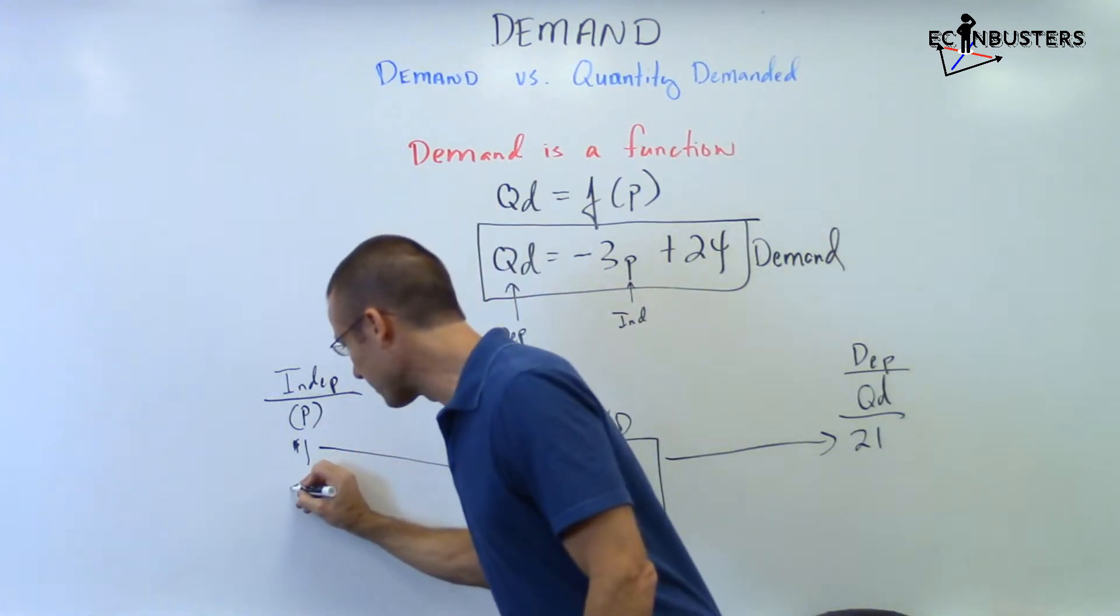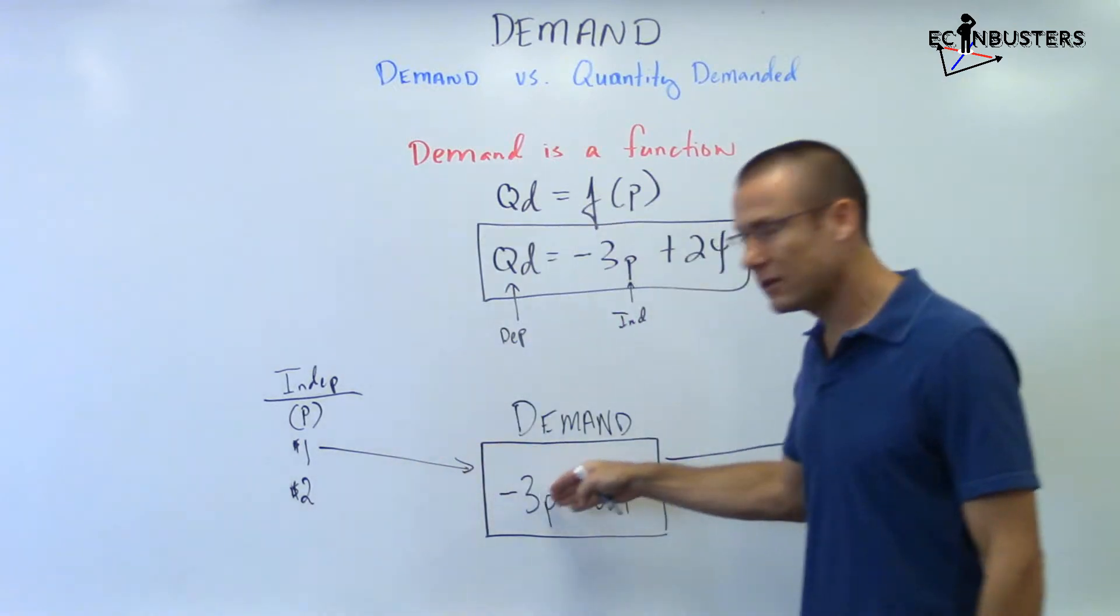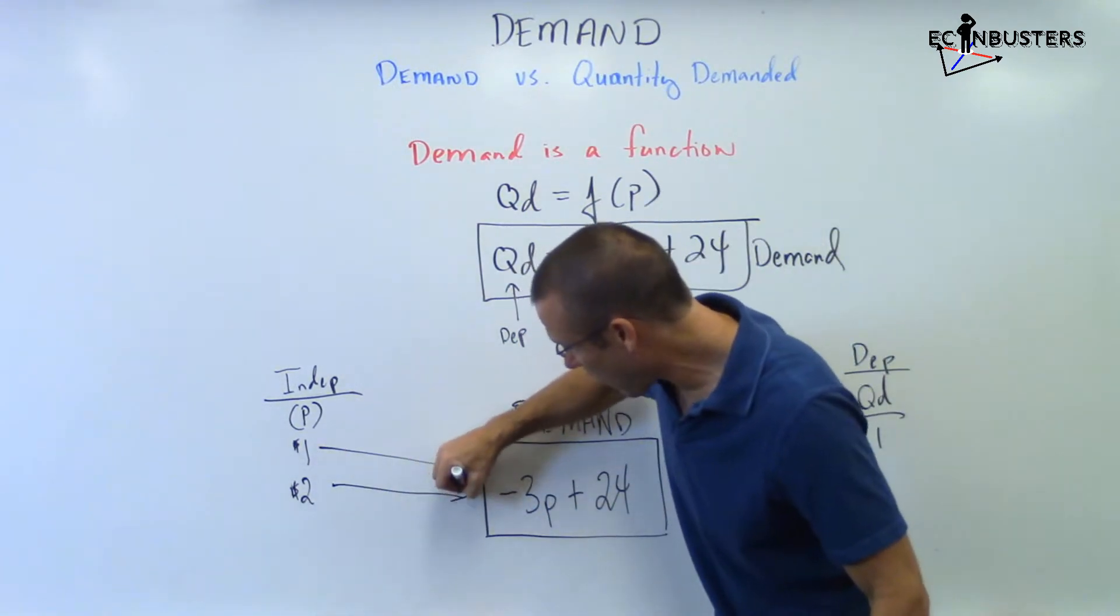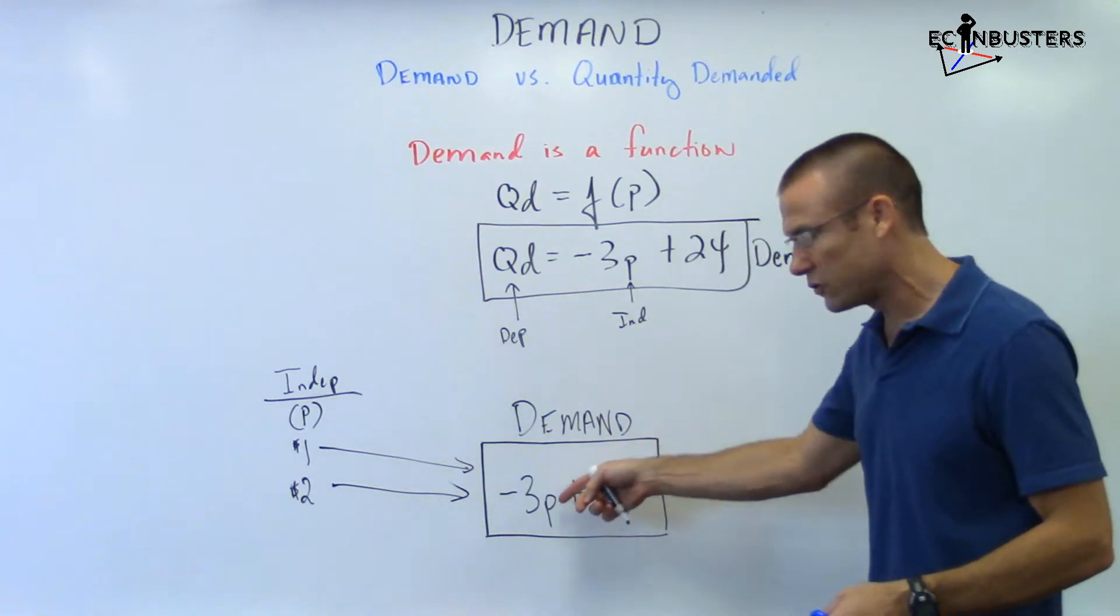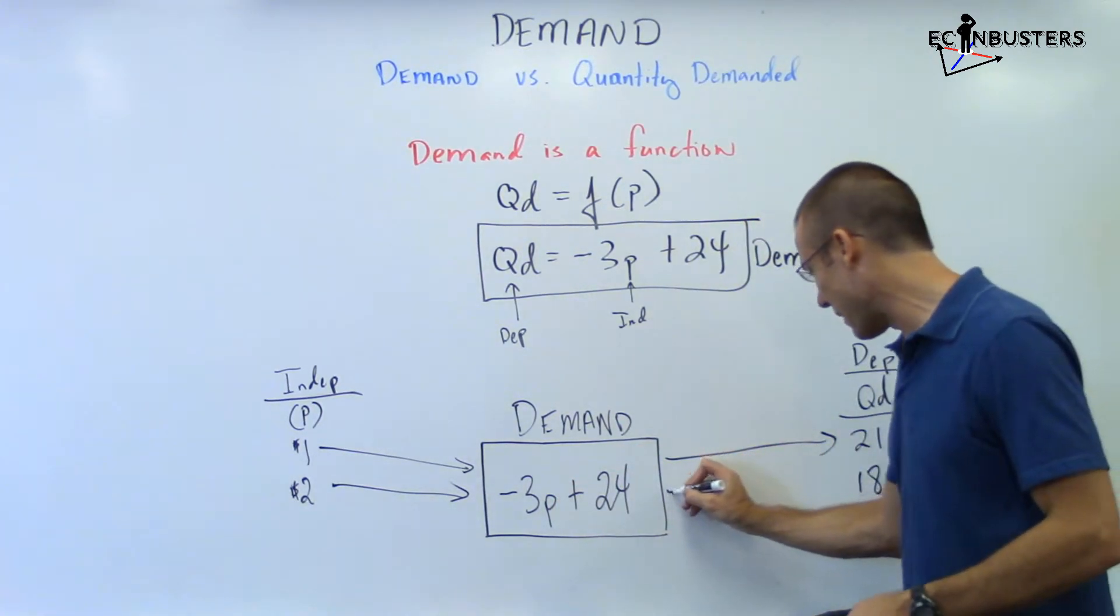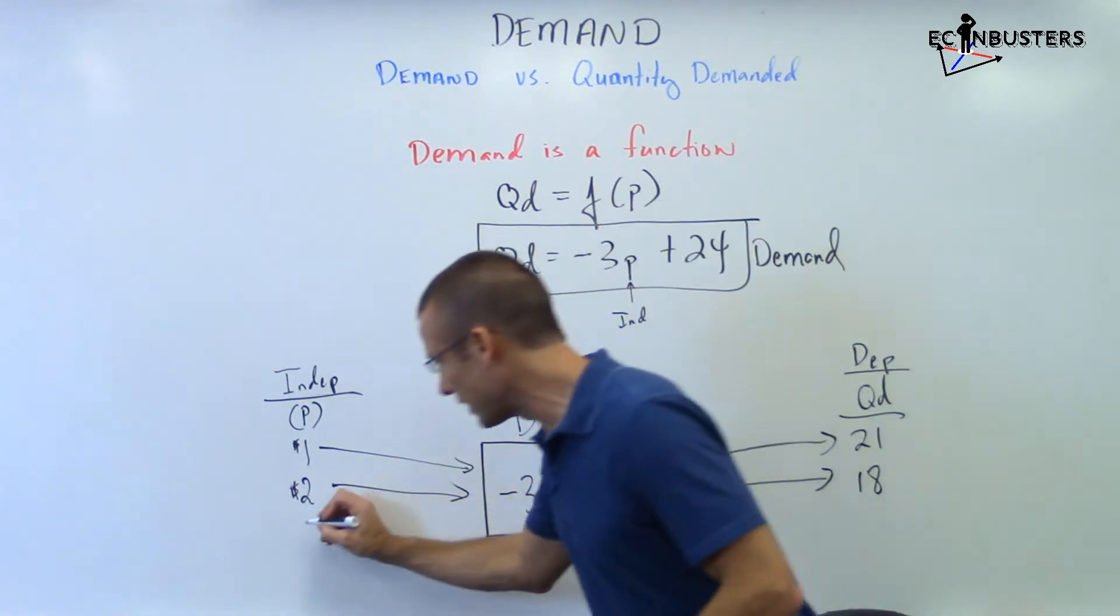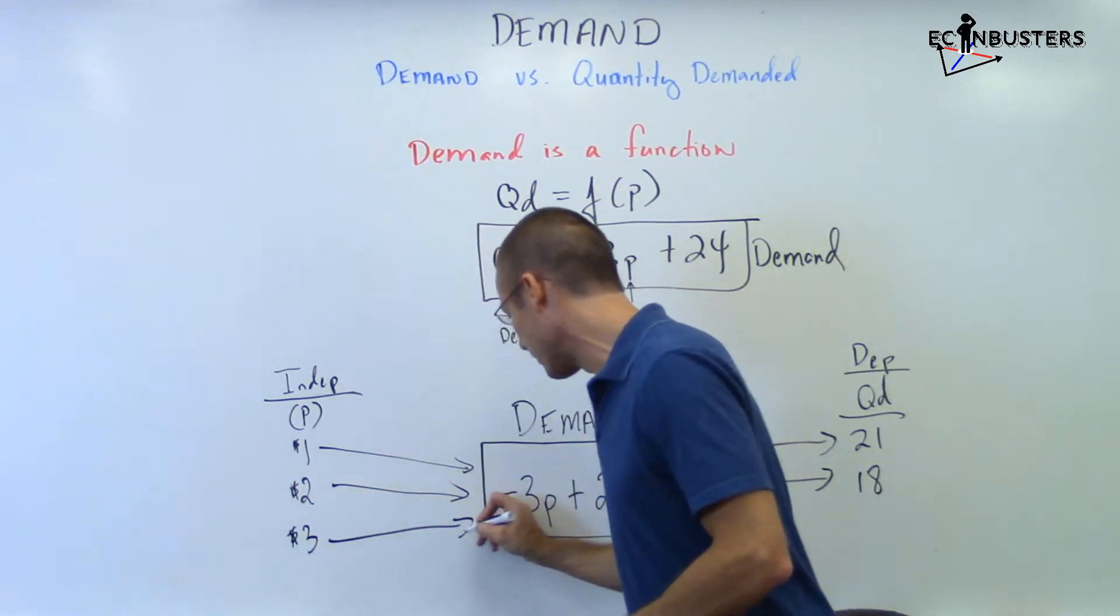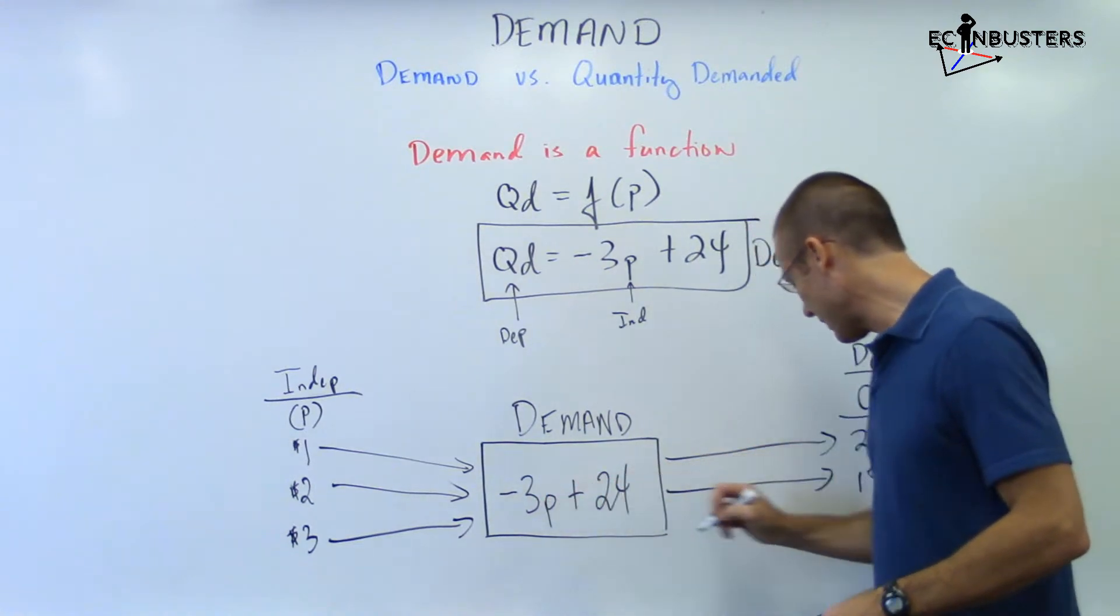I can change the price. The price can go to $2. I still have the same demand function, but my quantity demanded, of course, is going to change. I've got $2 in here. What do I get? A quantity demanded of 18 popping out on the other side. I can change price again. I can go to $3. Put $3 in there. We've got nine right there. I get 15 out right there.